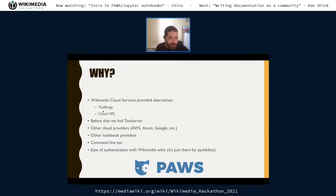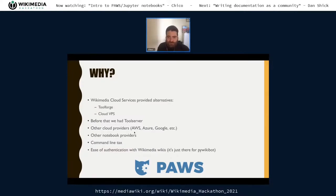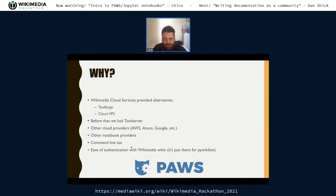We have other alternatives like Tool Forge and Cloud VPS for that. Before Wikimedia Cloud Services, we had two servers. You can always do the same things you do in PAWS on other cloud providers or notebook providers — we have Colab, mybinder.org, or you can spin something up in AWS, Azure, or GCP. But that does take effort. You need to understand how these things work, get used to that environment, and usually that means using the command line, which is not easy for everyone.